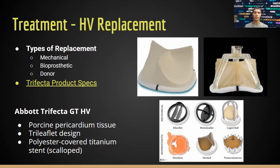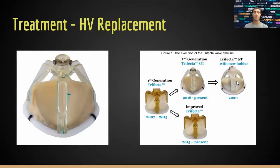Bioprosthetic heart valves are usually taken from porcine or bovine tissue and are sutured together in a way that simulates the native shape. For today's design we'll be looking at the Abbott Trifecta. As you can see in these images, it has a stent design covered in polyester-covered titanium, which gives it its shape. There have been many iterations and continuous improvements on this design going back as early as 2007.